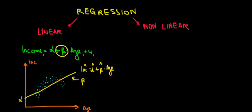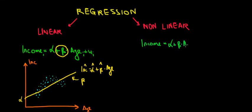So the question is, what do we do in this case? Well, we rely on nonlinear regression. A nonlinear regression just means that we are including a nonlinear variable. A better fit of the data would look like that. Income is equal to alpha plus beta times age plus gamma times age to the power of 2, and then an error term.